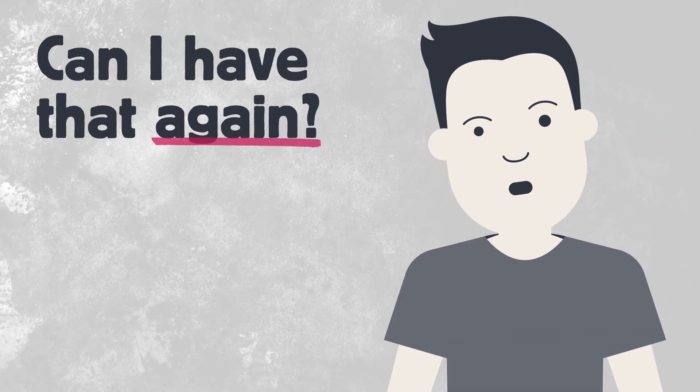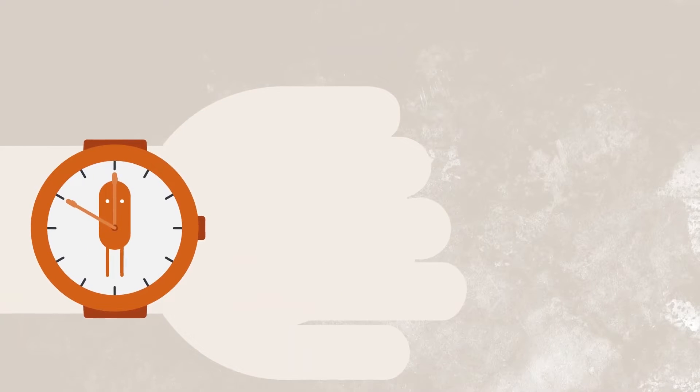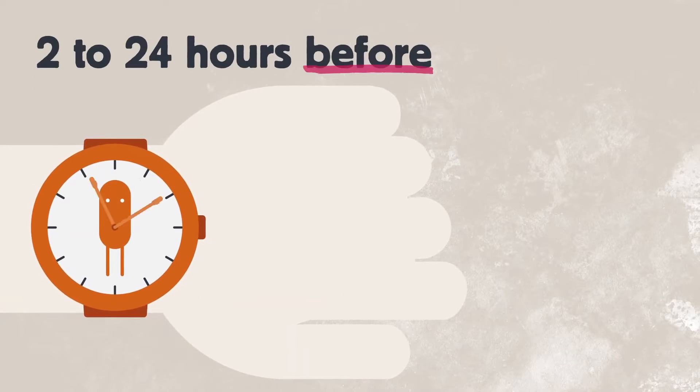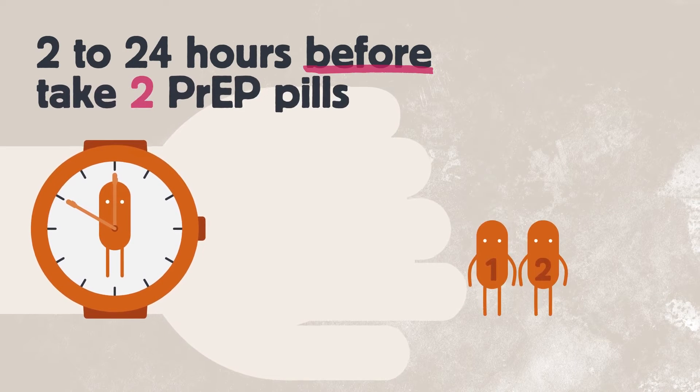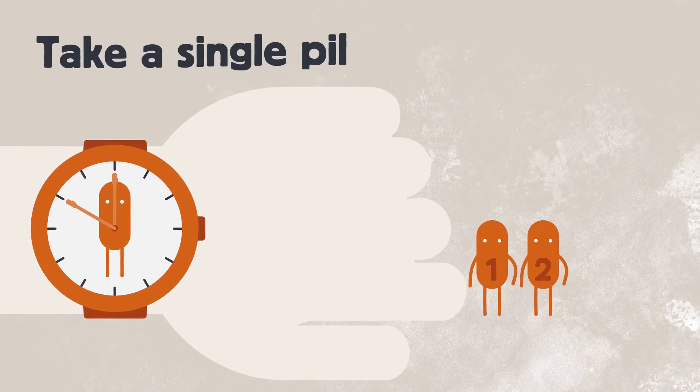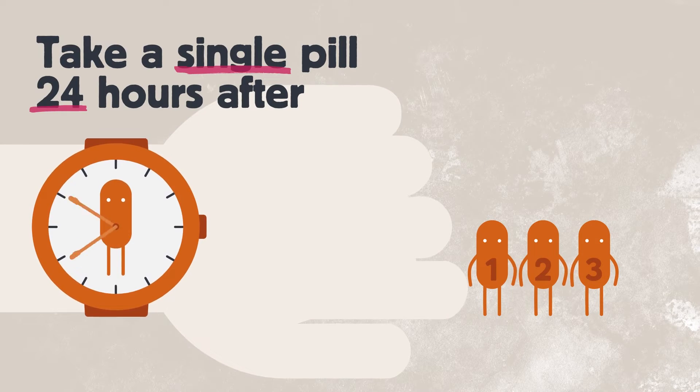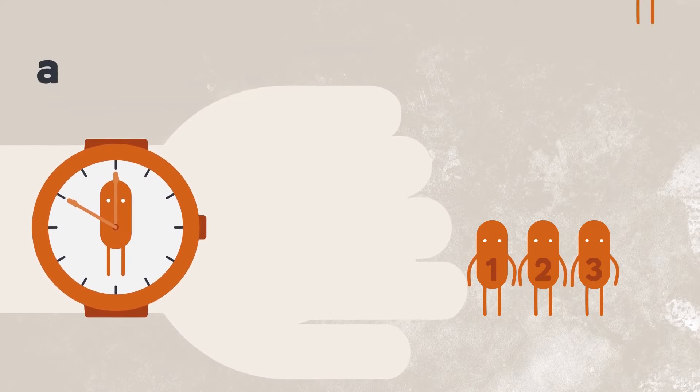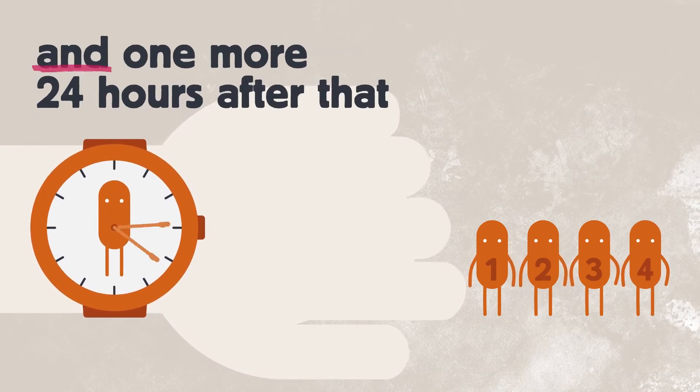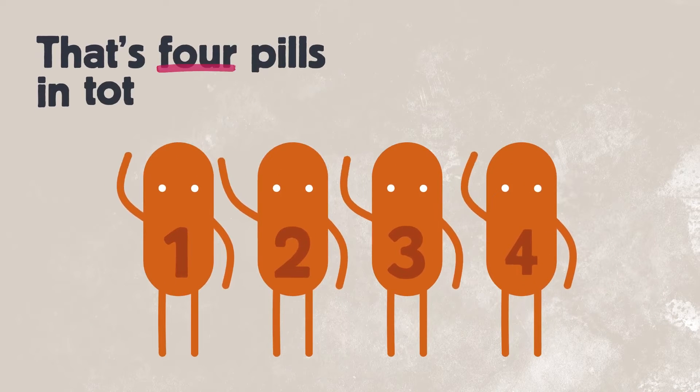Can I have that again? Then, 2 to 24 hours before sex, you take two PrEP pills. Take a single pill 24 hours after your first double dose, and one more pill 24 hours after that. That's four pills in total.